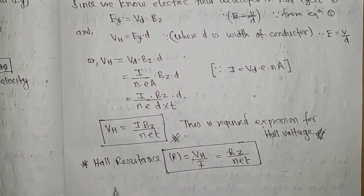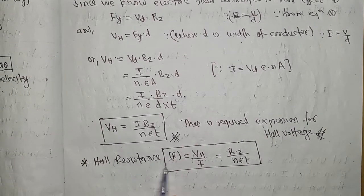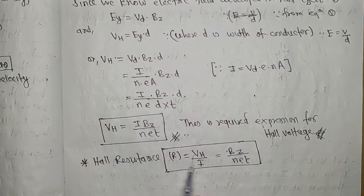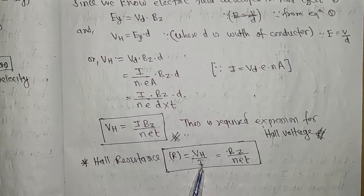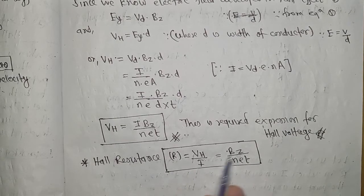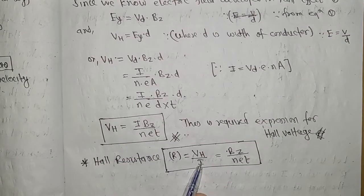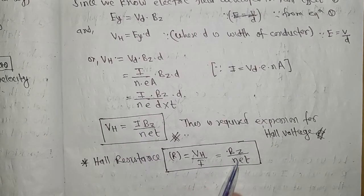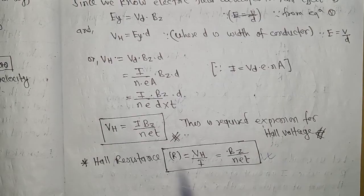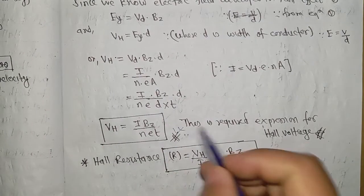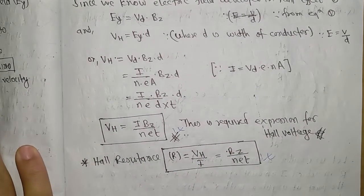Hall resistance is defined as voltage divided by current, so RH = VH/I = Bz/(nε·t). This is the Hall resistance formula. This completes the derivation for both Hall voltage and Hall resistance worth eight marks.